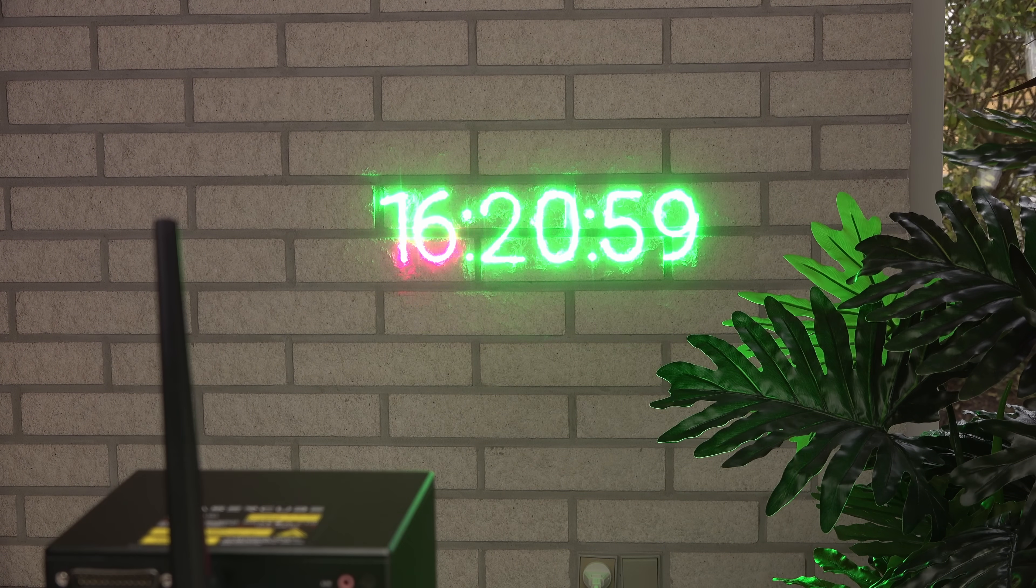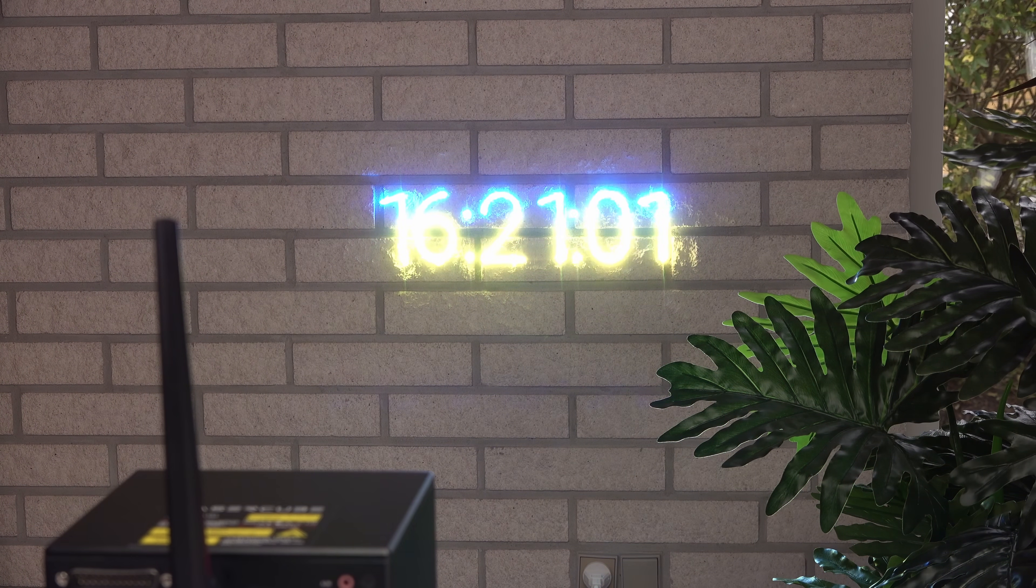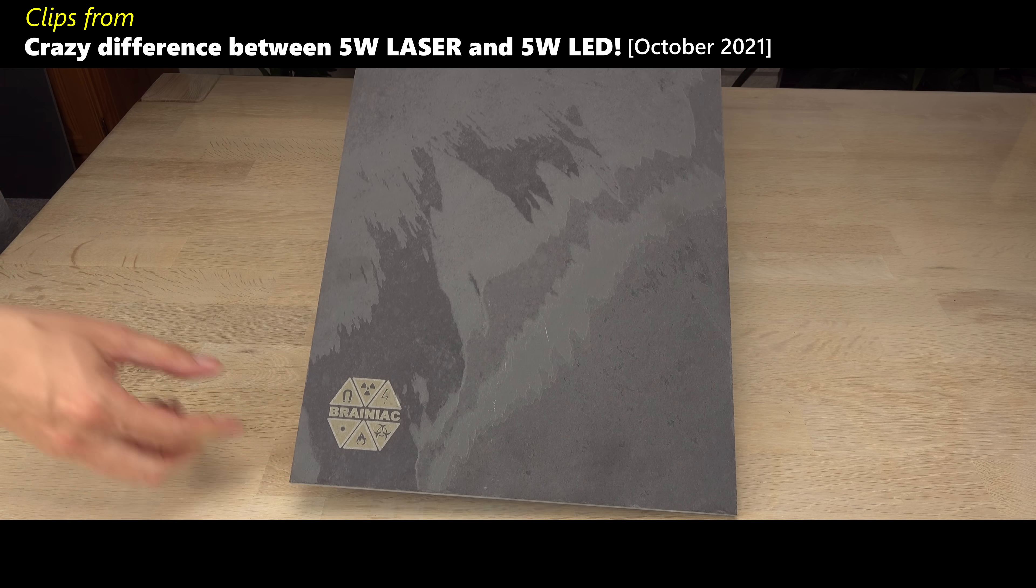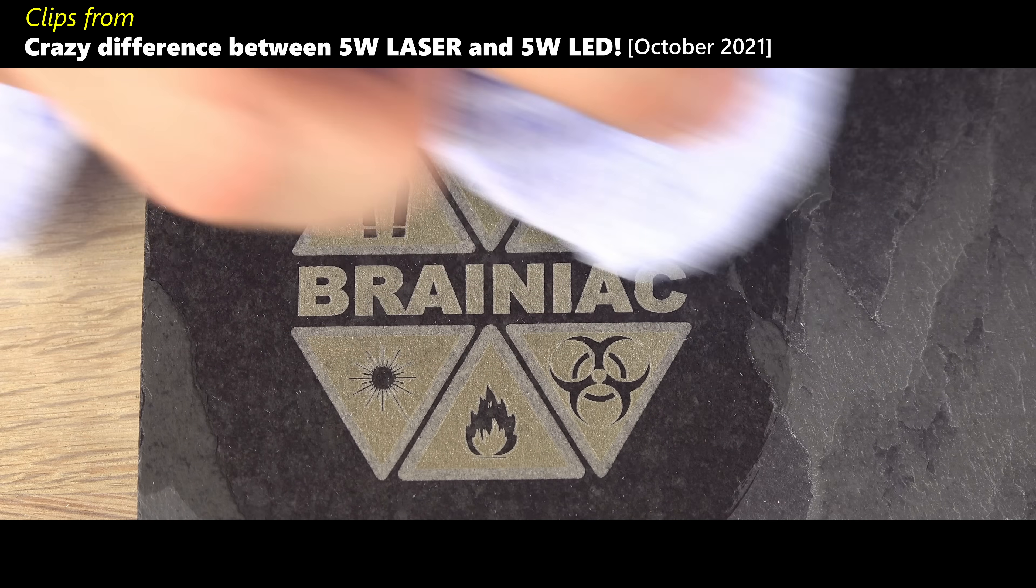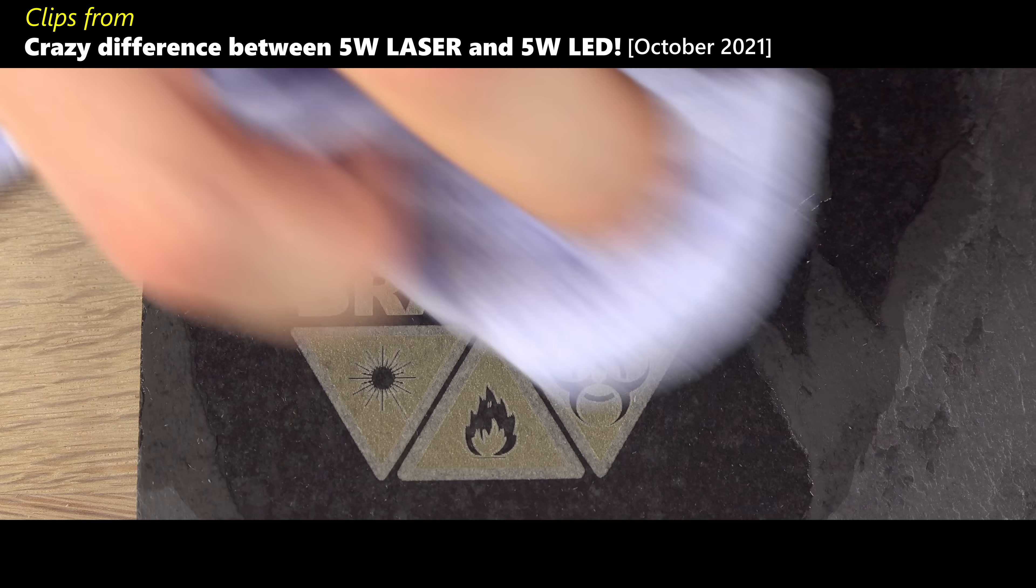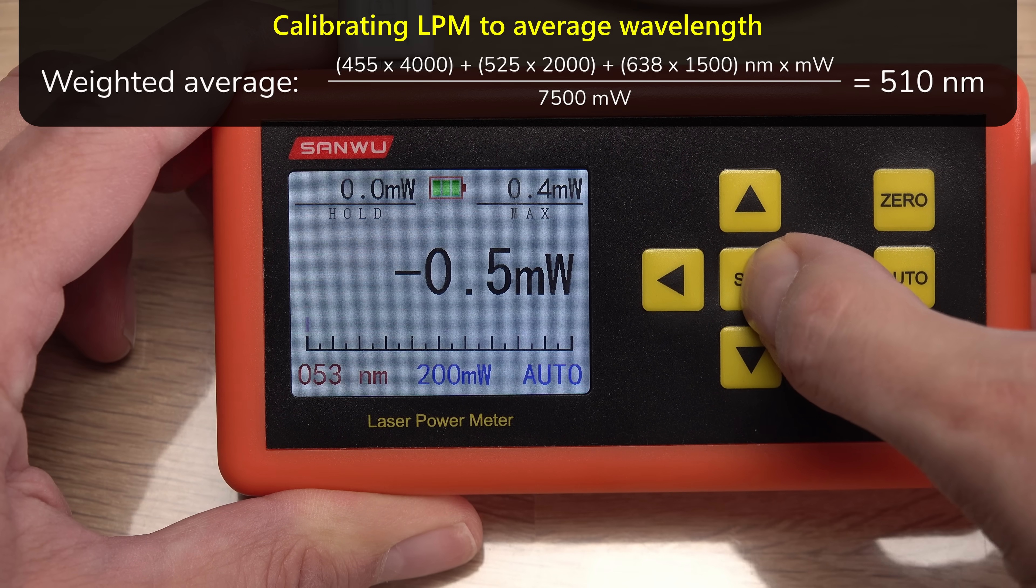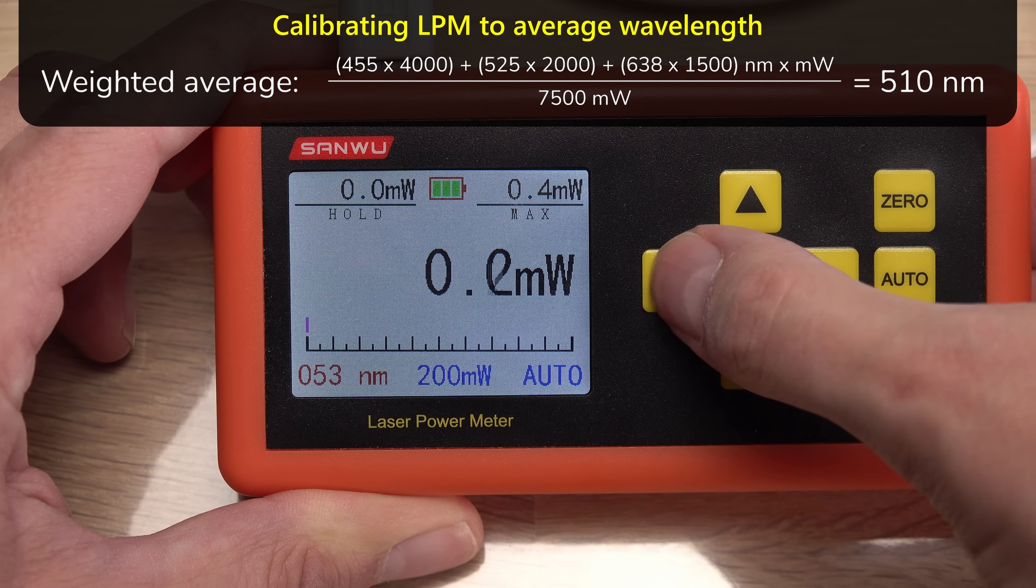It physically reminds you of the extreme power hiding in this little cube. It is advertised as 7.5 watts, 7500 optical milliwatts. If that doesn't sound like much to you, watch an earlier video where I engrave on rock with a laser of less power. But is it really that much? Time for a laser power meter test.